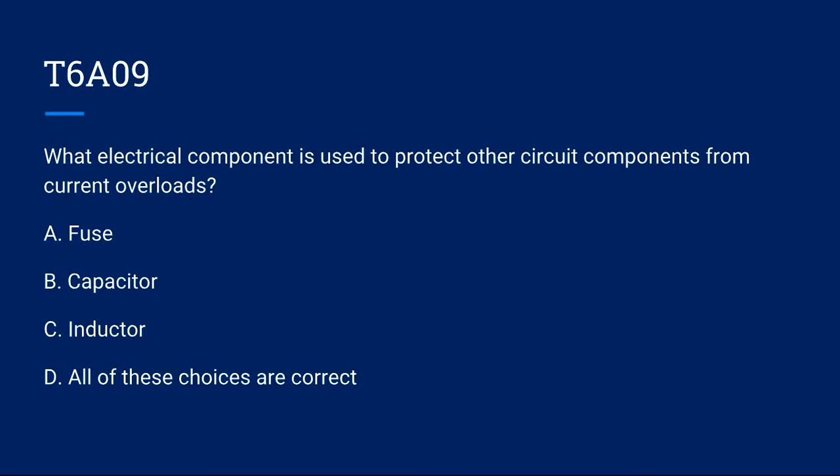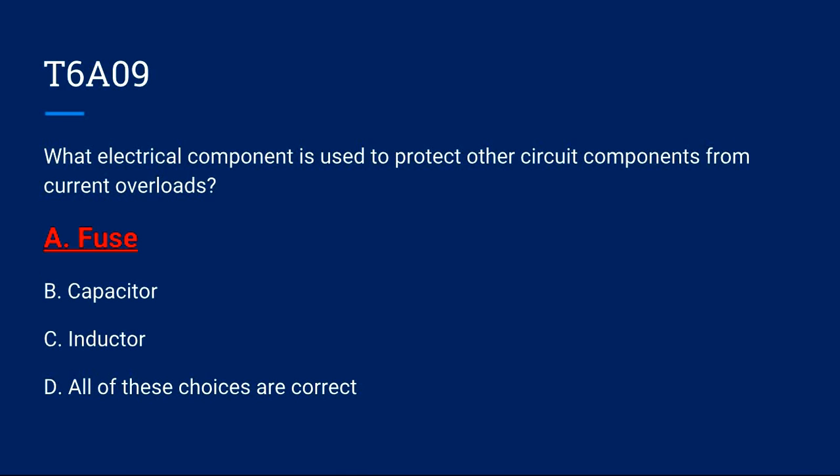T6A09: What electrical component is used to protect other circuit components from current overloads? A, fuse. B, capacitor. C, inductor. Or D, all of these choices are correct? The correct answer is A, a fuse.